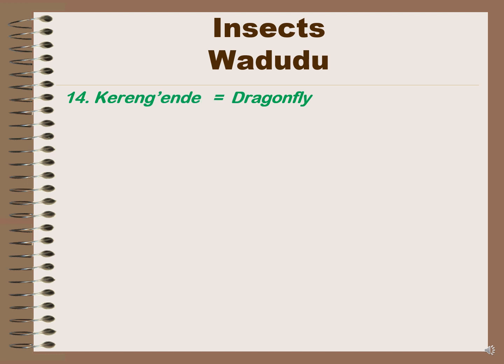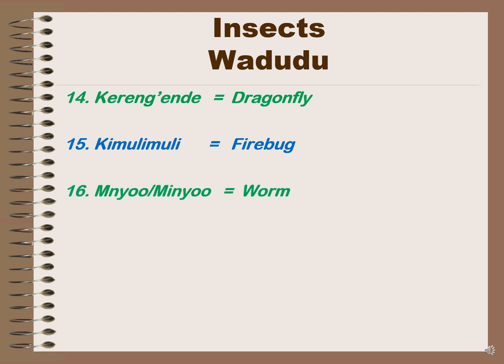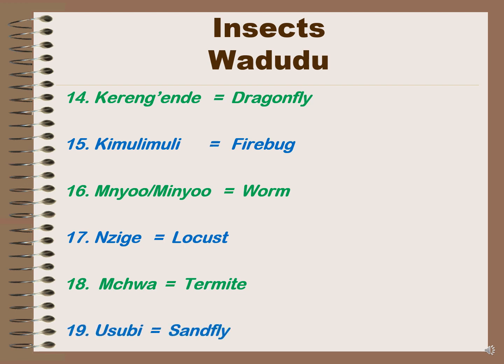Number 14, 'keringende' means dragonfly. Number 15, 'kimulimuli' is firefly. Number 16, 'mnyoo' is worm — 'mnyoo' is the singular form and 'minyoo' is the plural form. Number 17, 'nzige' is locust. Number 18, 'mchwa' is termite. Number 19, 'usubi' is sandfly.